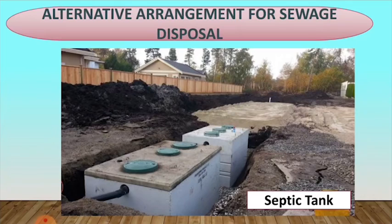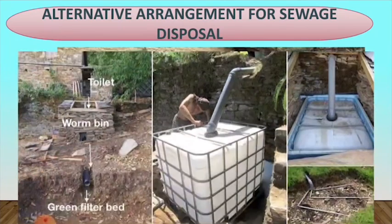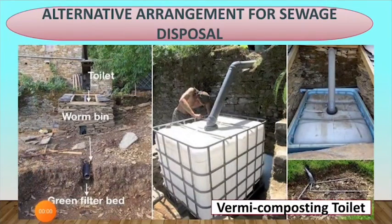Another example is a biogas plant, where biogas is produced. This gas is used as a fuel and is a mixture of four gases: methane, hydrogen, carbon dioxide, and hydrogen sulfide. There are also vermicomposting toilets — a toilet in which human excreta is treated by worms and converted into a humus-like material used for agronomic purposes.